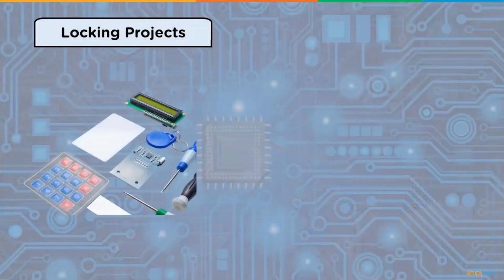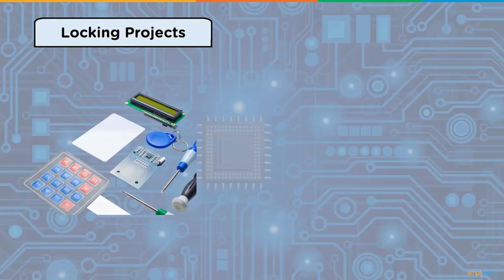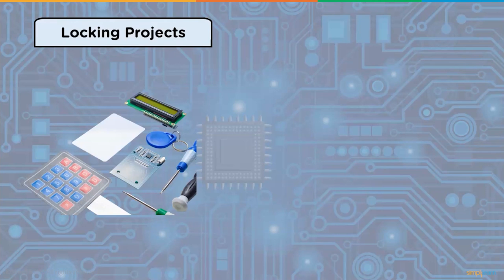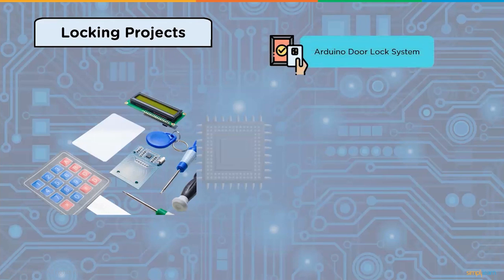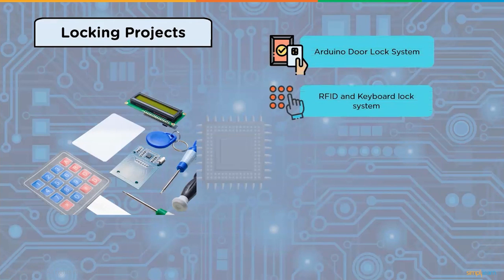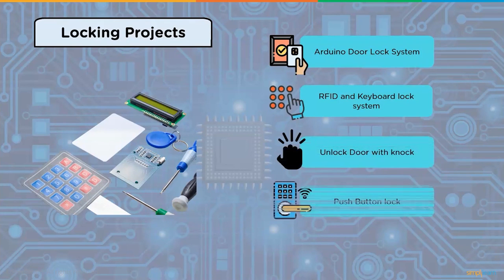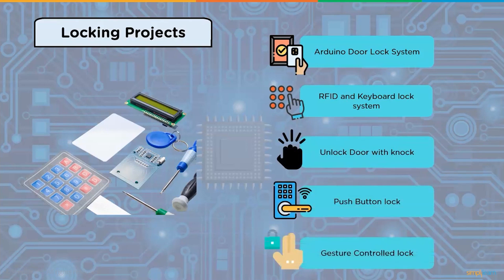Locking projects using Arduino: we frequently need to secure a space so that no one can enter without permission. Security systems rely on fingerprints, retina scanners, iris scanners, face ID, RFID readers, password pins, and other biometrics. The most cost-effective solution is an Arduino-based password or pin system. Some projects include Arduino door lock system, RFID and keyboard lock system, unlocked door with knock system, push button lock system, and gesture control lock.